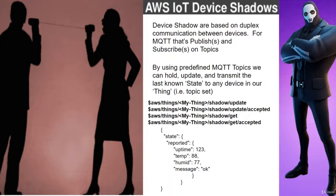You can think of Device Shadows as normal topics on steroids. Because unlike just normal topics, by using this key phrase $AWS with these different Shadow State topics, we get current state held on the cloud. So when a device is disconnected and we reconnect that device or a new device, we can grab the last known good state. You can't do that with a normal publish or subscribe topic.